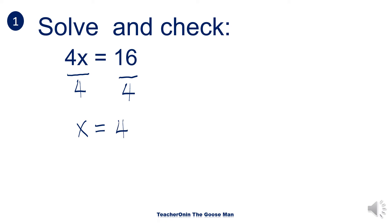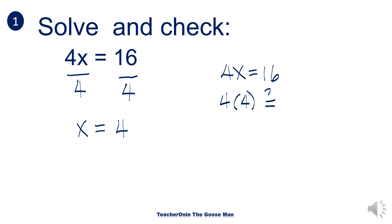We found out that the value of x is equal to 4. We would like to substitute the value of x into 4x = 16 and determine whether the value of x will satisfy the equation. So I'll substitute x = 4: 4 times 4 — is it equal to 16? So 4 times 4 is 16, which is equal to 16.